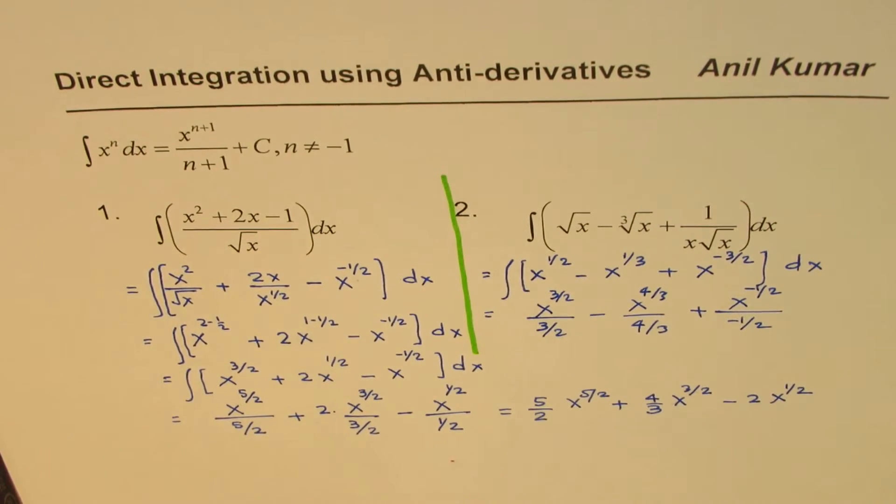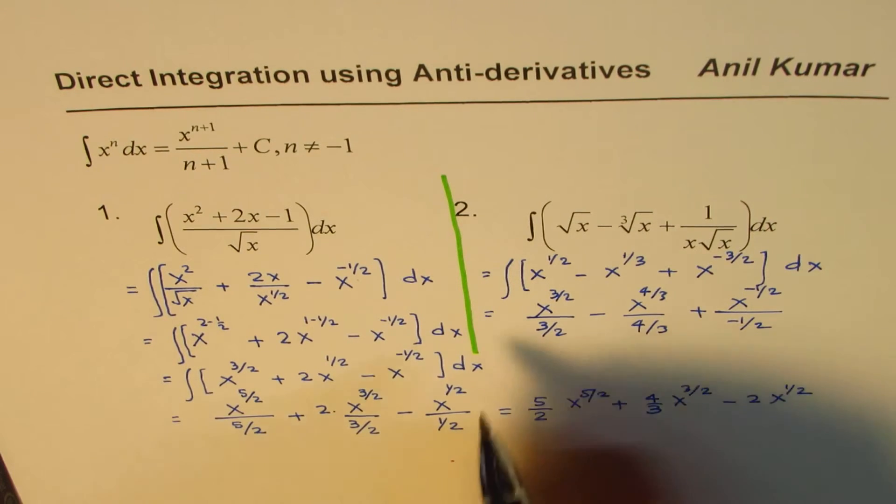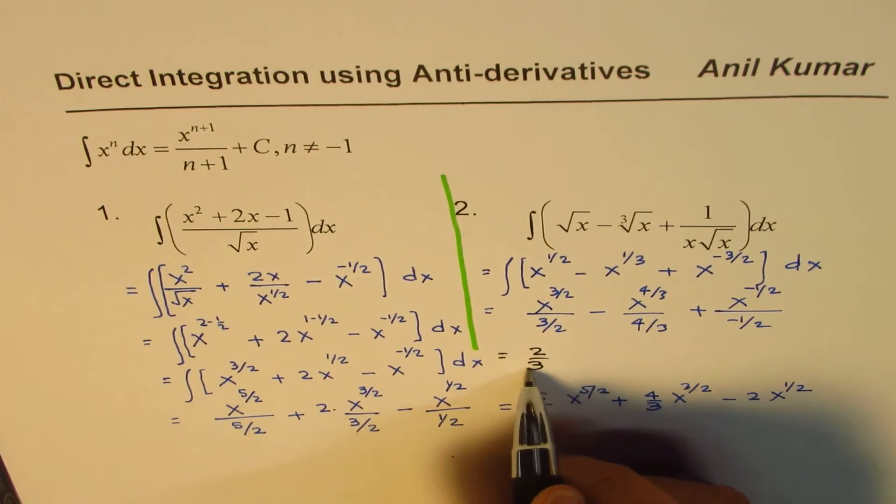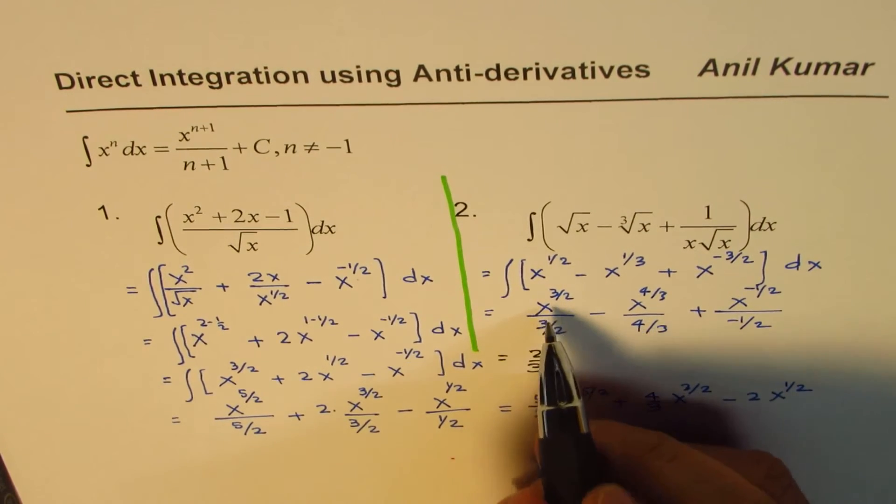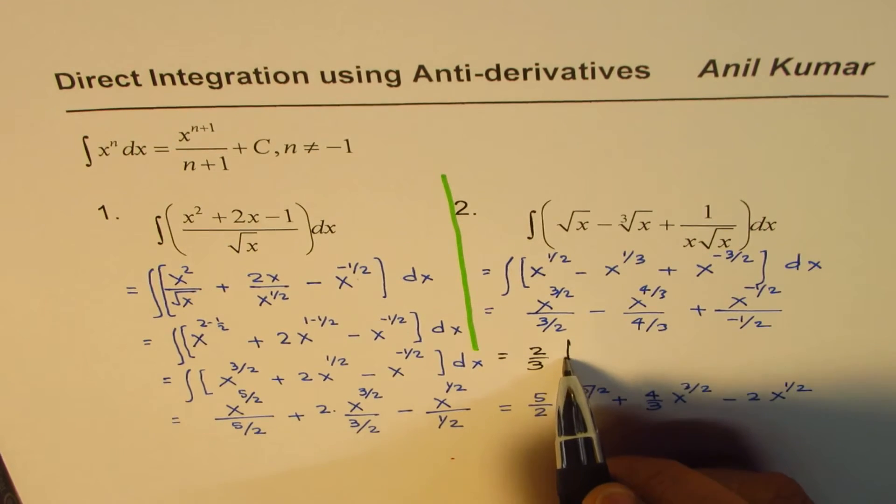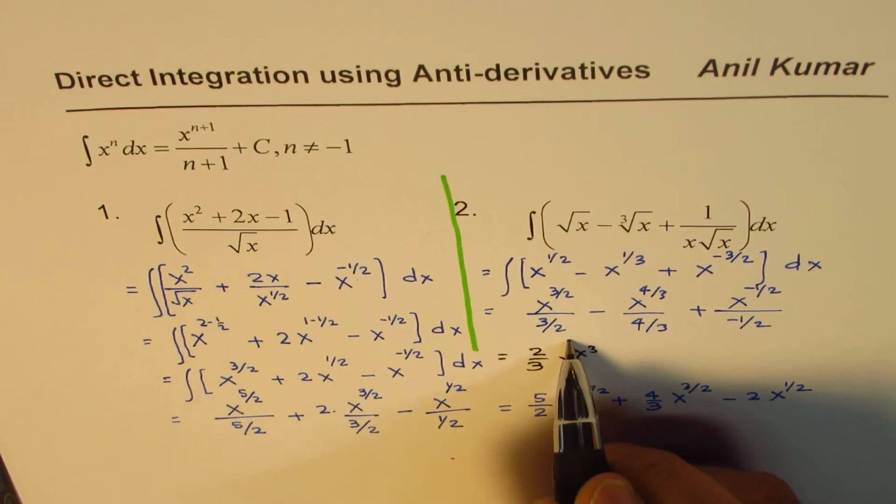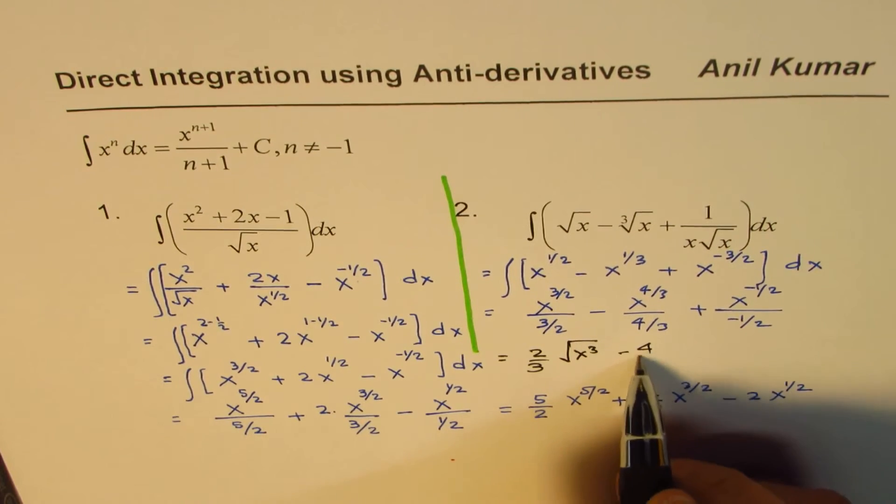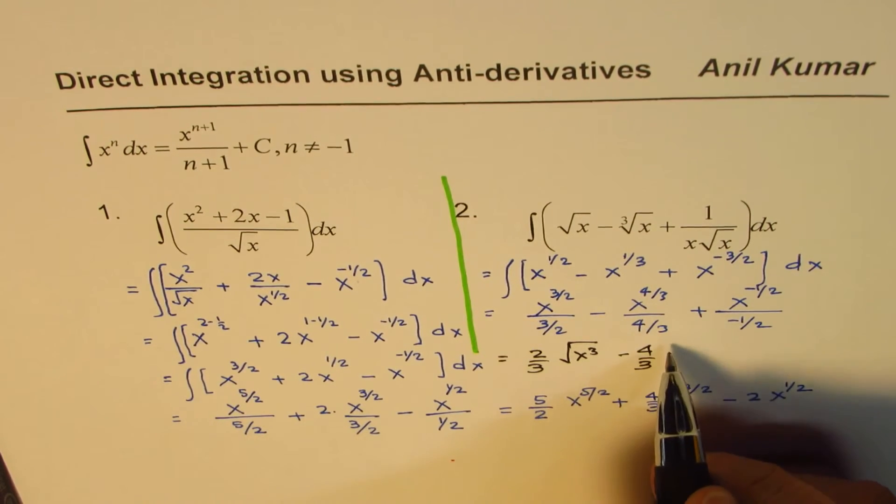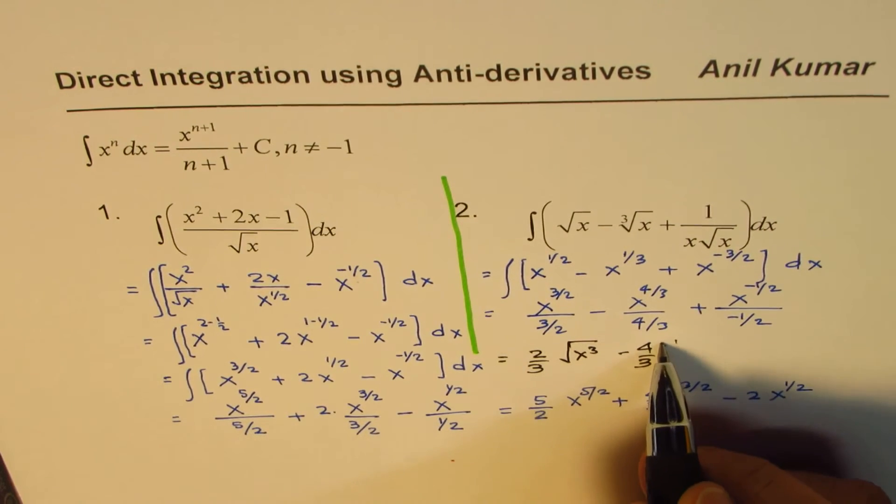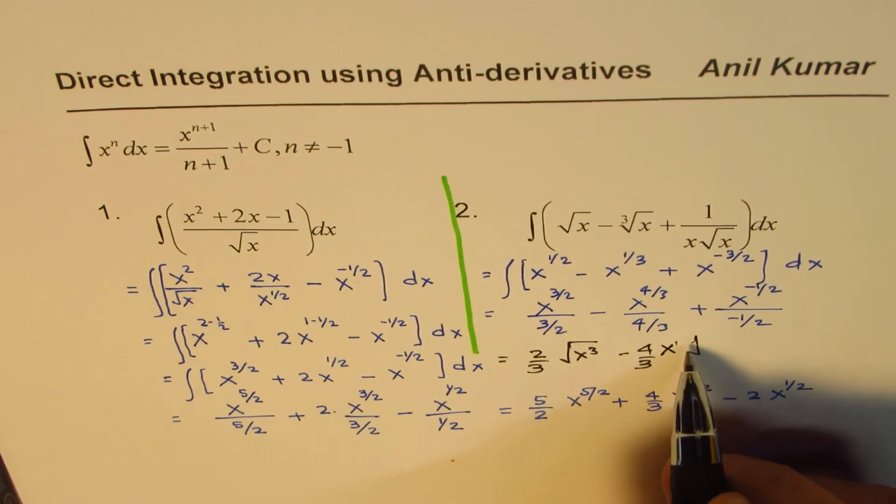And then we can, as we did last time, we'll just rewrite this. Let me use a different thing. So we get 2 over 3. So if you want, you can write it in this form also. So we have square root of x cubed. And this one is minus 4 over 3. And this one is fourth power. So which fourth power means it is 3, so 1x comes outside, cube root.